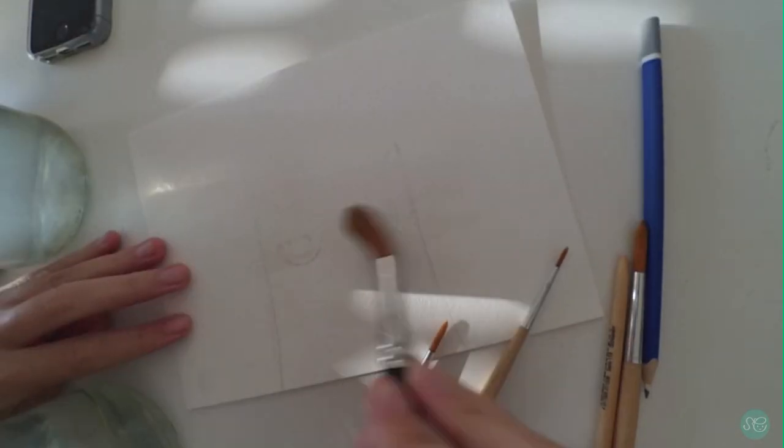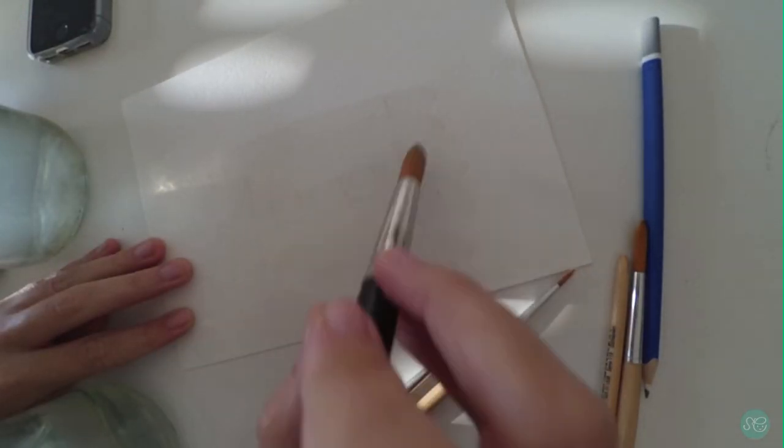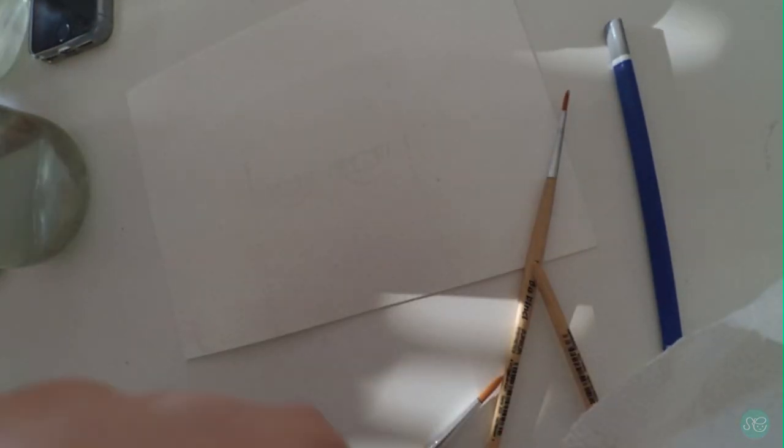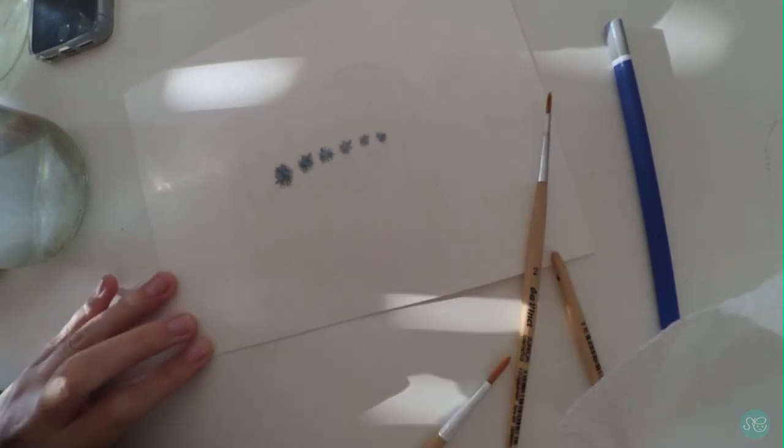I started by using a watercolor pencil to make the outline and then used a brush to wet the paper. After the paper was wet enough, I started using the watercolors quite randomly.